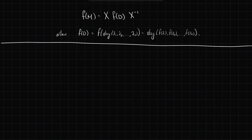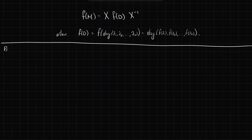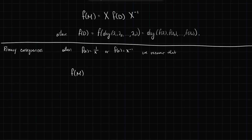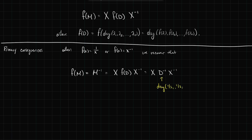This has some really important consequences. The first is that when f(x) = 1/x, equivalently x inverse, we recover that f of a matrix equals the inverse matrix, calculated as X f(D) X⁻¹ = X D⁻¹ X⁻¹. The diagonal inverse is really easy to calculate — it's just the diagonal of 1/lambda_1, 1/lambda_2, ..., 1/lambda_n. So this makes finding inverses very easy.